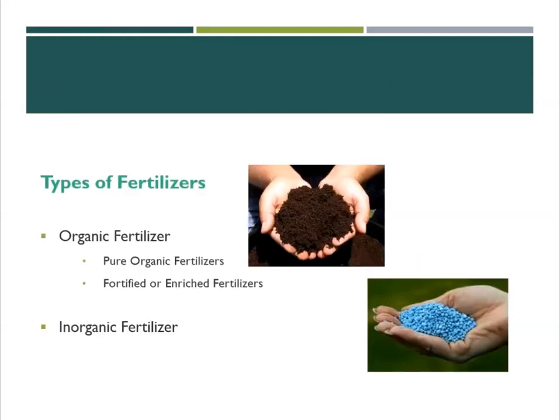There are two types of fertilizers. First is organic. Organic is any fertilizer product of plant or animal in origin that has undergone decomposition. It is further classified into pure organic fertilizers, where no chemical has been added, or the fortified or enriched fertilizers that are enriched with microbial inoculants, hormones, or chemical additives to increase nutrient content.